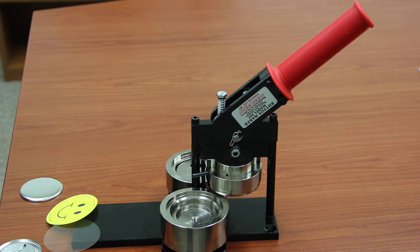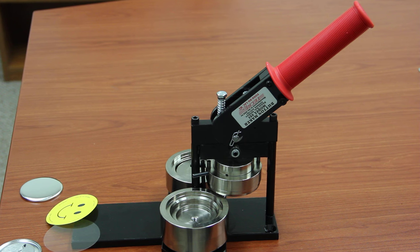This is the Tecra model 225 manual button machine. Today we're going to demonstrate how to make a two and a quarter inch pin back.